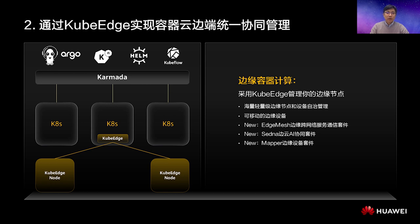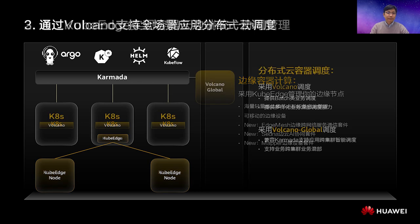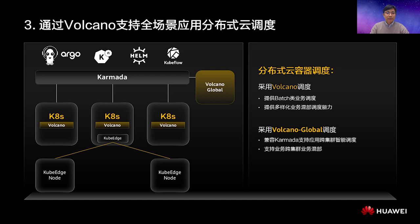Third, you can use Volcano to expand your cluster. It provides diverse scheduling policies to help you better run batch services. Volcano is now upgraded to support hybrid service deployment, so online and offline services can smoothly run in the same cluster. We will soon release Volcano Global in the community, which will integrate Karmada and provide intelligent hybrid scheduling of applications across clusters.